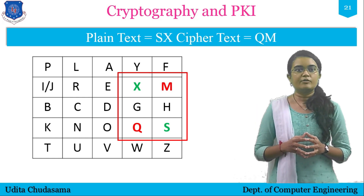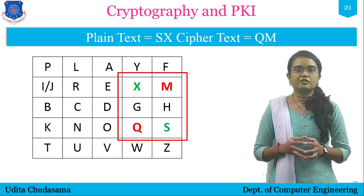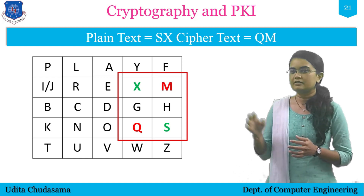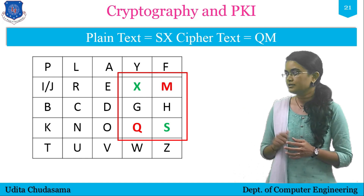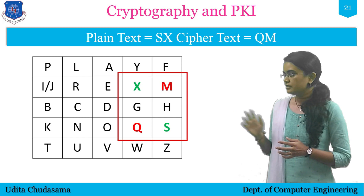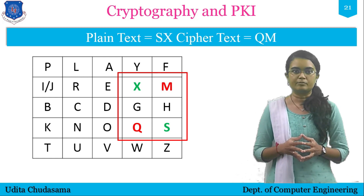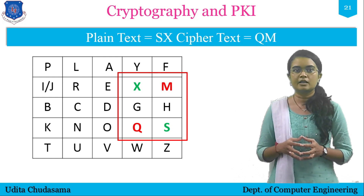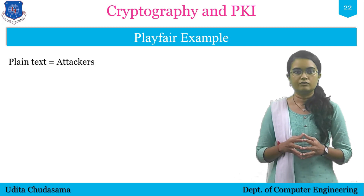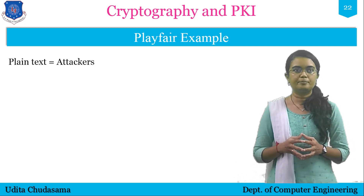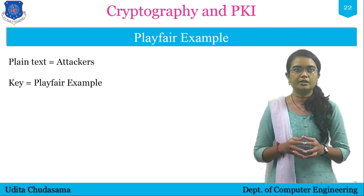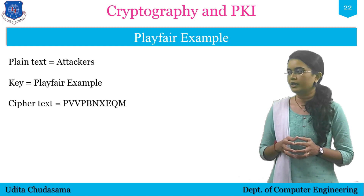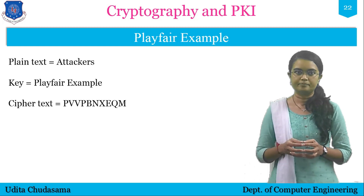So this is how encryption is done for Playfair Cipher. Plain text 'attackers' with key 'playfair example' gives the cipher text: P, V, V, P, B, N, X, E, Q, M.